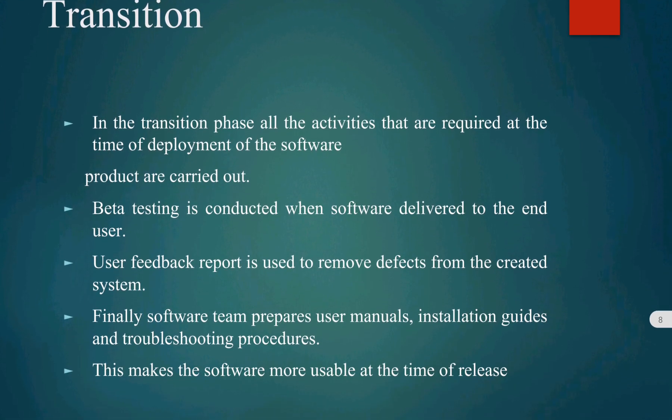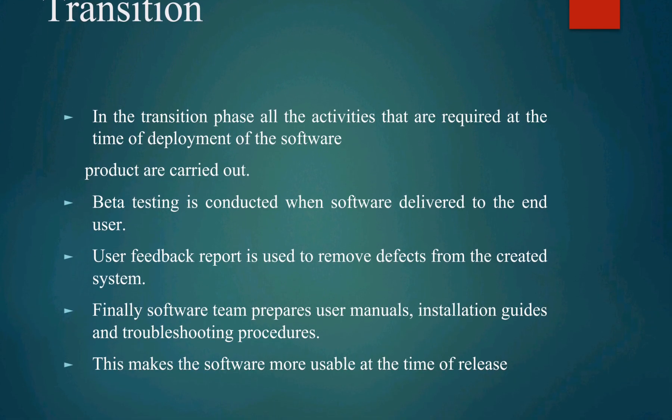The next phase is the transition phase. All the activities required at the time of deployment of the software product are carried out. Transition is nothing but delivering the product to the customer. During delivery, beta testing is conducted when the software is delivered to the end user. User feedback is collected, and based on that, all the defects are removed from the system. Finally, the software team prepares a user manual, installation guides, and troubleshooting procedures, making the software more usable at the time of release.